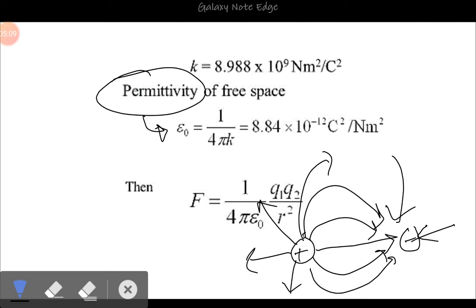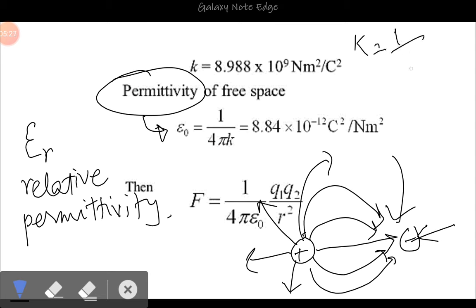If you're using any other medium, then we use epsilon r, which is relative permittivity. So k in case of vacuum is 1/(4π ε₀). And k for any other medium is 1/(4π ε₀ εᵣ). So you multiply the relative value of epsilon with epsilon naught if there's any other medium than vacuum.